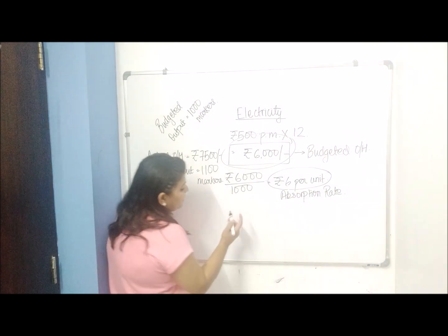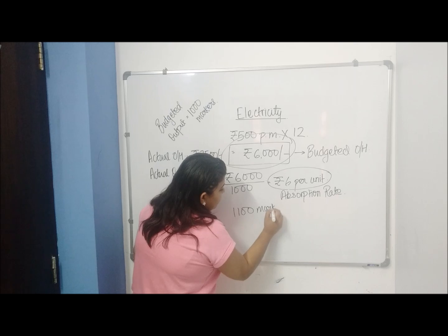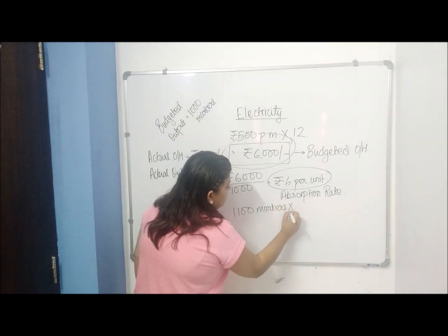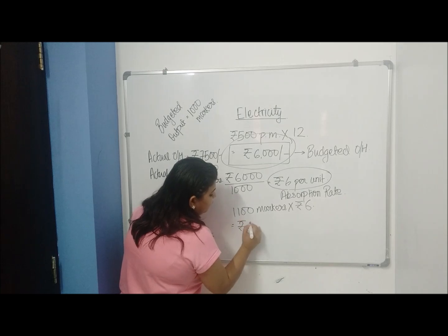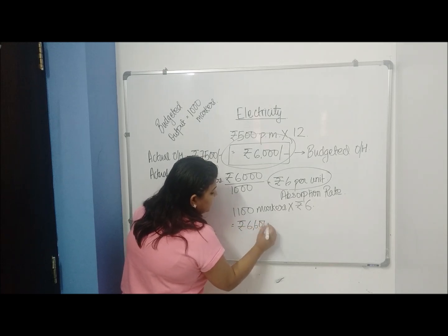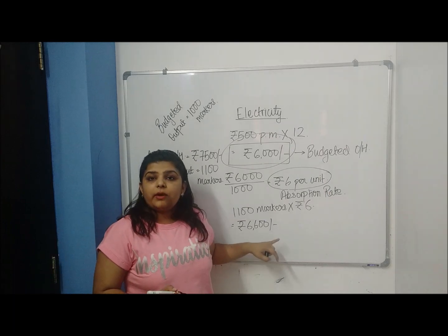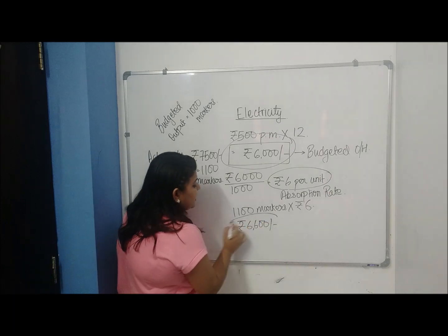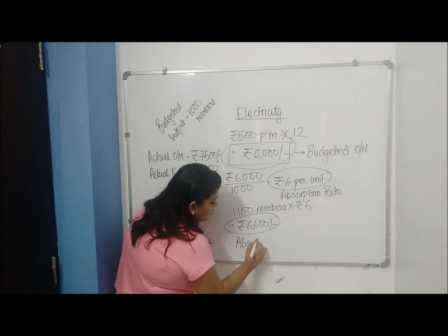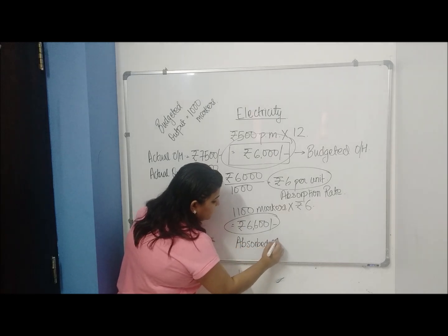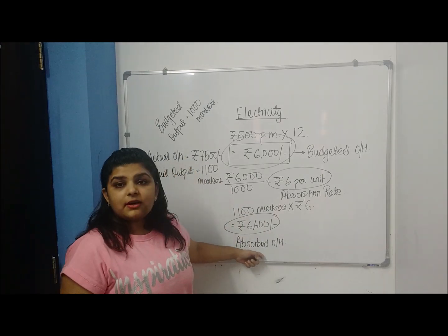That is 1100 markers multiplied by the absorption rate of rupees 6. So what is going to come back to my pocket is rupees 6600. This is absorbed overheads.